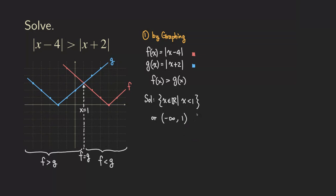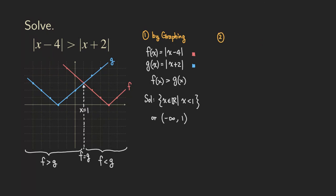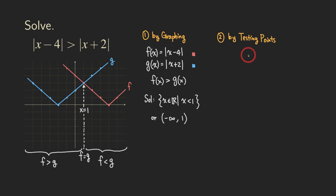Now I'm going to show you the second way of doing it, which is by testing points. To test points, the first thing we want to do is find the point of intersection of the two functions. We can already see from the graph that the point of intersection is at (1, 3). But if we want to do it algebraically, we set the two functions equal to each other — we set f equal to g.